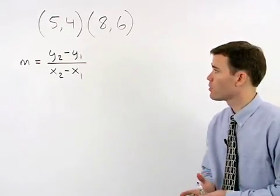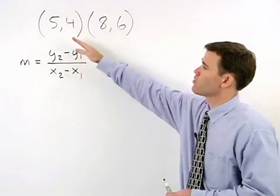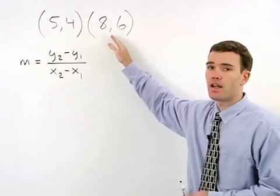So let's say we're asked to find the slope of the line that passes through the points (5, 4) and (8, 6).